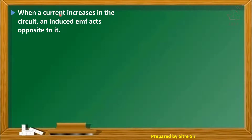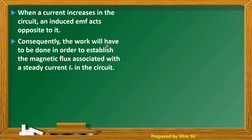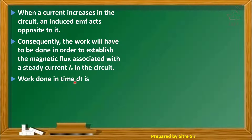When a current increases in the circuit, the induced EMF acts opposite to it. Consequently, work will have to be done in order to establish the magnetic flux associated with the steady current I₀ in the circuit. The work done in time dt is equal to potential into charge, which equals current into time.